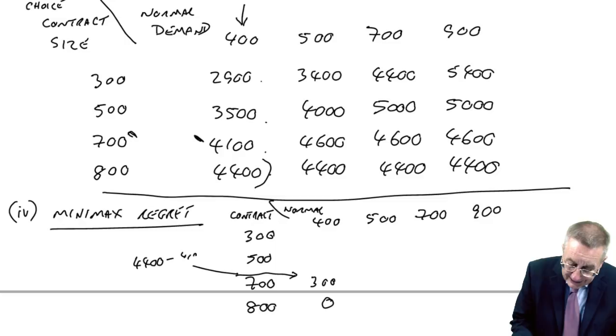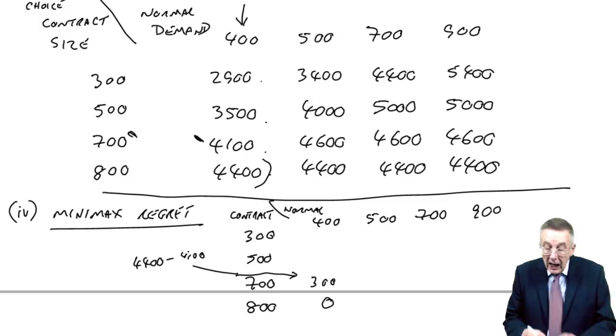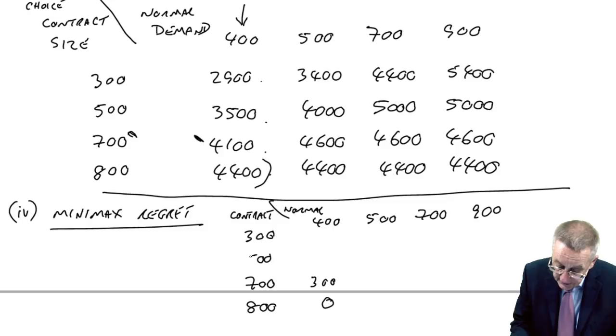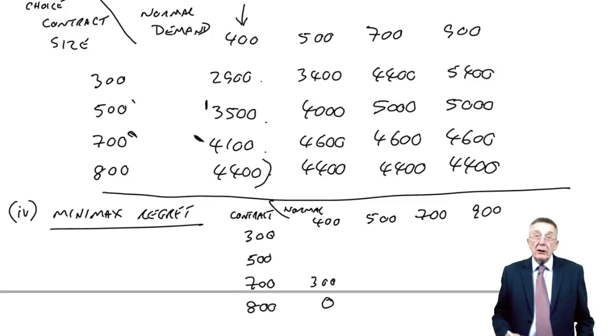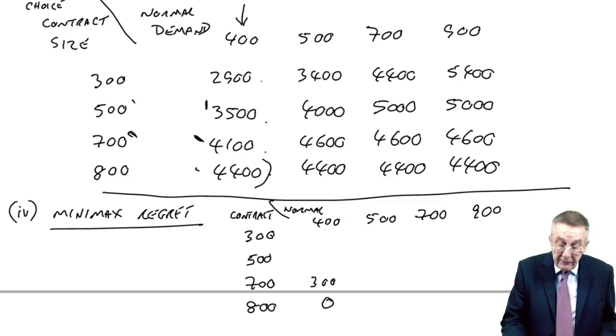What happens if we'd signed a contract for 500? If we'd signed a contract for 500, we'd have got 3,500 profit. But we know we could have had 4,400 if we'd made a better choice. So by choosing 500, we've lost the difference. And the difference, 4,400 minus 3,500 is 900. There's the loss, the regret, the opportunity cost.